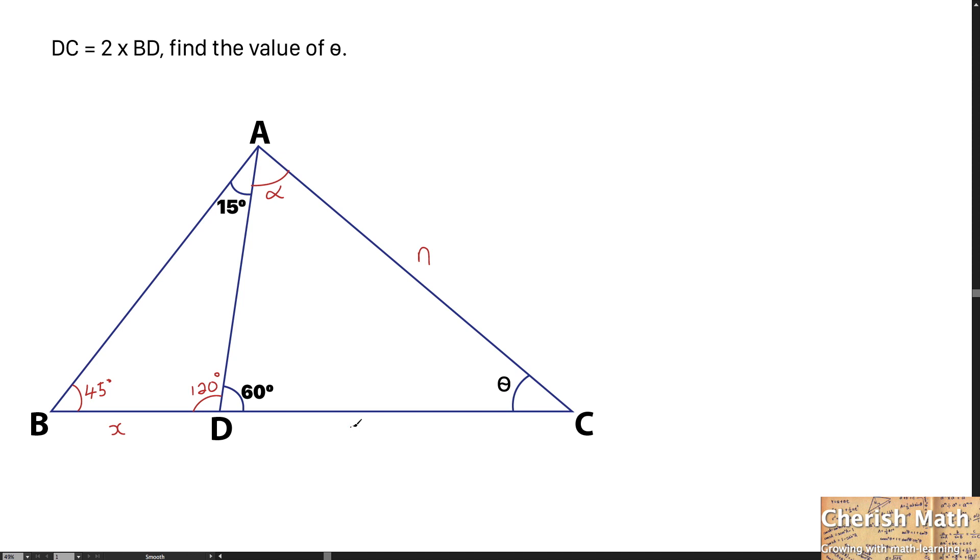By referring to triangle ADC, I'm going to use the sine rule. 2X divided by sine alpha equals N divided by sine 60 degrees. Now, the value of N becomes 2X sine 60 degrees over sine alpha, using cross multiplication.